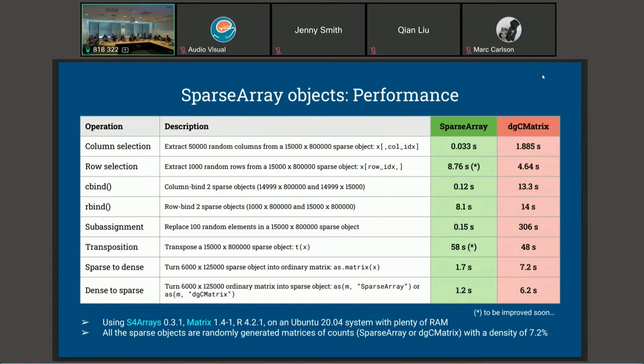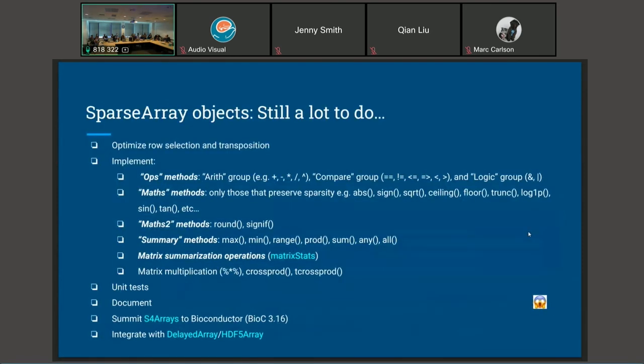Here are some benchmarks. Column selection is just amazingly fast compared to dgcMatrix. Overall, it's very efficient, way more efficient than dgcMatrix object. This one here, it's not a typo. It's really a dgcMatrix object. I guess they were not designed to support this operation because it's not a common operation, but subassignment should work anyway. But with dgcMatrix it's very, very slow. I think I'm done. There's a long list of things that still need to be implemented to have a fully featured array-like container that you can use for all the basic operations that you expect to be able to do. Still work here.